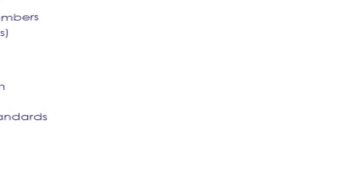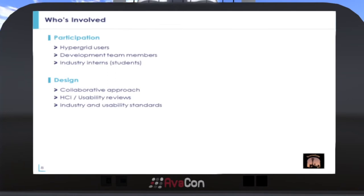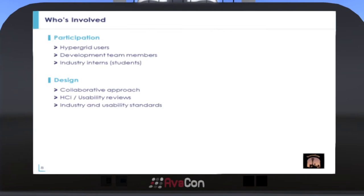Project SceneGate has various areas of participation. We have hypergrid users from different grids involved in testing and R&D supporting this project. We have experienced developer team members who are active in Open Simulator communities — that's important because if your development team is not active, they don't have a pulse on the user community. And we have industry interns; Natasha is one of them from Thales, who have been really contributing a lot to the project.